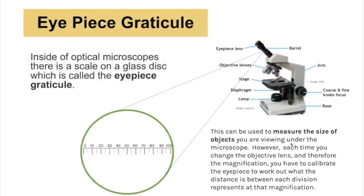You may also need to measure the size of a specimen using the eyepiece graticule. Inside the optical microscope is a scale on a glass disc called the eyepiece graticule, located within the eyepiece, which can be used to measure objects viewed under the microscope. However, each time you change the objective lens and therefore the magnification, you must recalibrate the eyepiece to determine what each division is worth. I'll link a video on how to calibrate the eyepiece graticule.